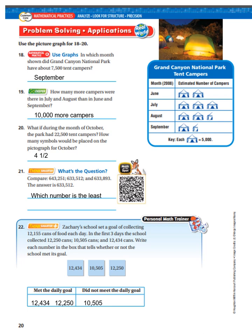Let's go over this. It says use the picture graph for numbers 18 through 20. So I hope you looked at the picture graph very carefully. The first answer, in which month did the Grand Canyon National Park have about 7,500 campers? It was in September. How many more campers were in July and August than in June and September? Well, you had to do a little bit of adding there. About 10,000 more campers. What if during the month of October the park had 22,500 tent campers? How many symbols would be placed on the picture graph for October? About four and a half. You had to make sure that you read that.